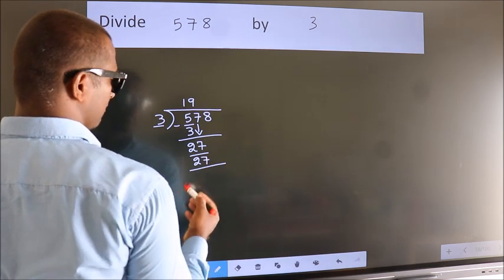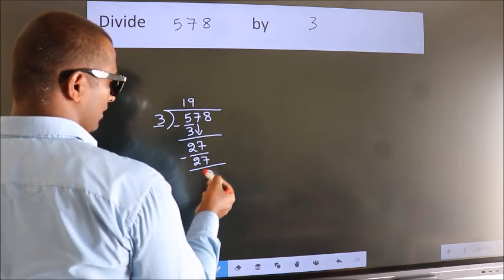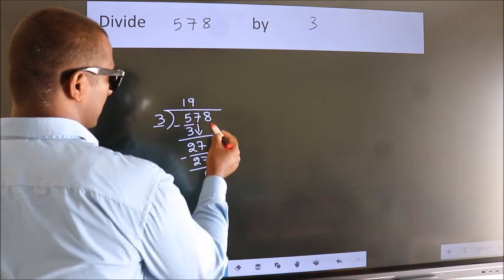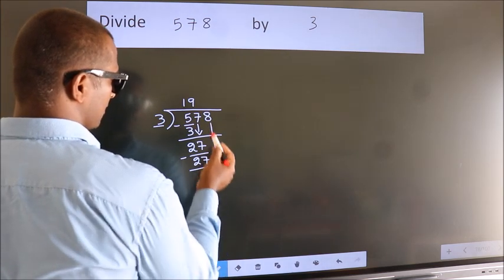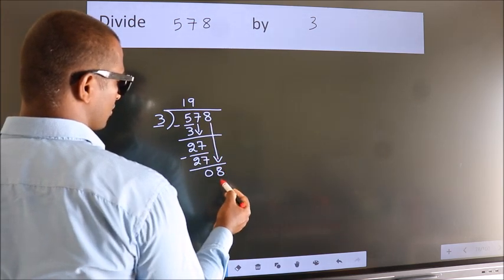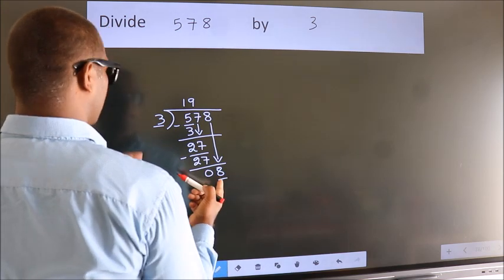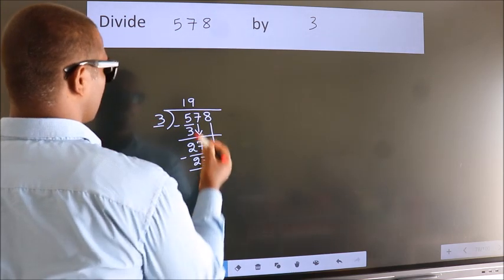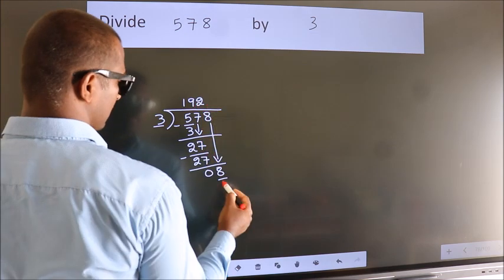Now, we subtract. We get 0. After this, bring down the beside number. So, 8 down. 8. A number close to 8 in the 3 table is 3 2s, 6.